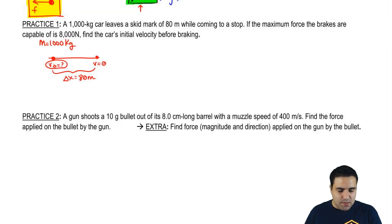Alright, so here's a brief sketch of this problem. The mass is 1,000. The car is coming to a stop, so the final velocity is 0. And in doing that, it leaves a skid mark of 80. We assume that that's our delta x.